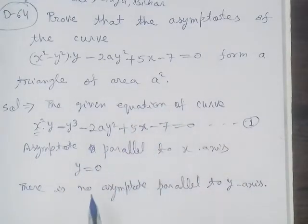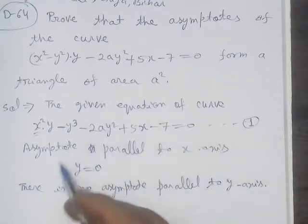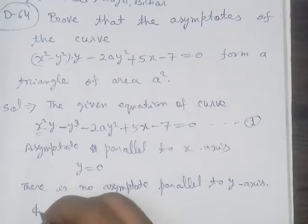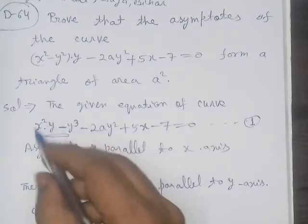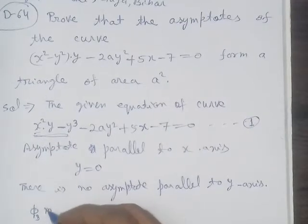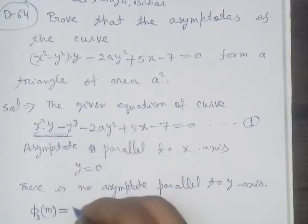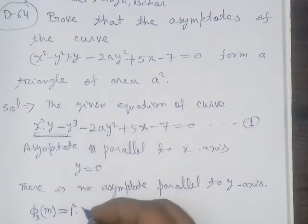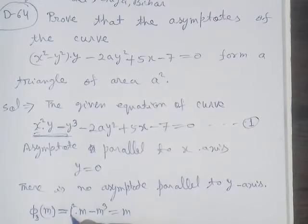Since we need to prove a triangle, we need 3 asymptotes. One is already found (y=0), so 2 more are needed. We use the standard method and set up the expression φ₃, which is the collection of the highest-degree terms — the degree-3 terms of the curve equation.